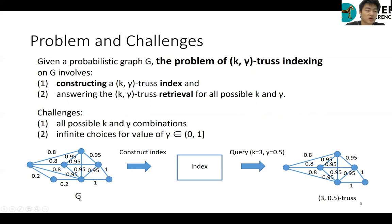Here is an example of our problem. Given a graph G, we first construct an index for G and then query 3-0.5-truths using the index.